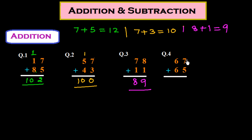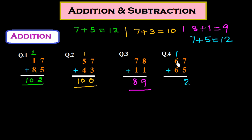In question number 4, the unit place numbers are 7 and 5. We add 7 plus 5, which is 12, so we write down 2 and carry 1. Then 1 plus 6 plus 6 equals 13, giving us 132.